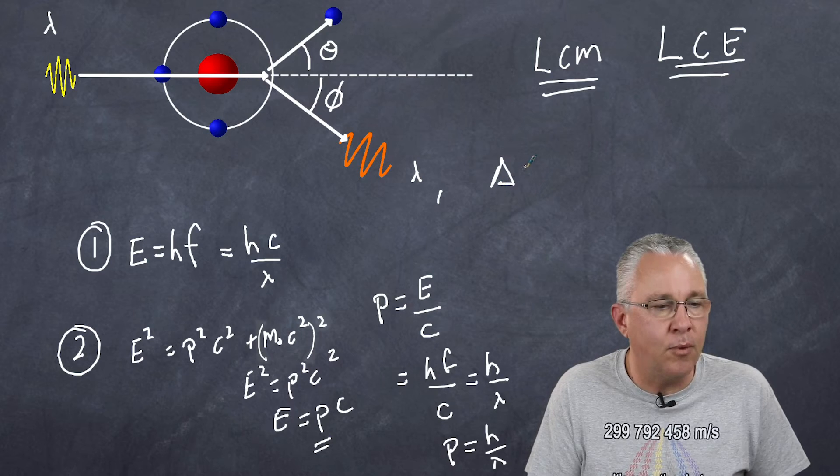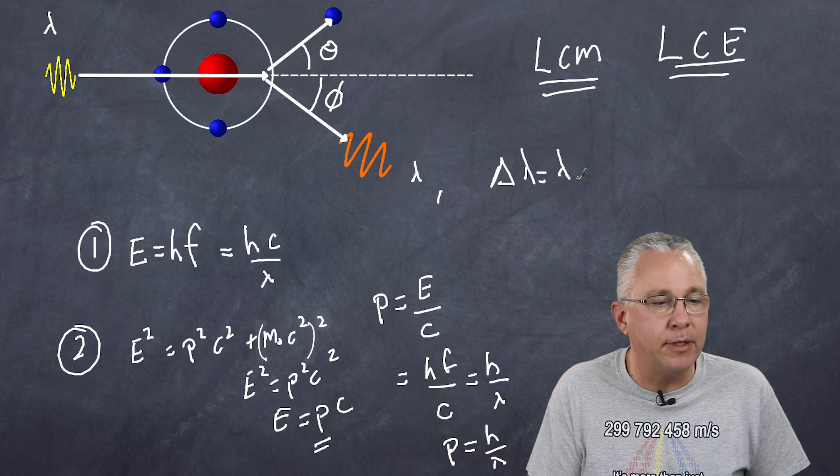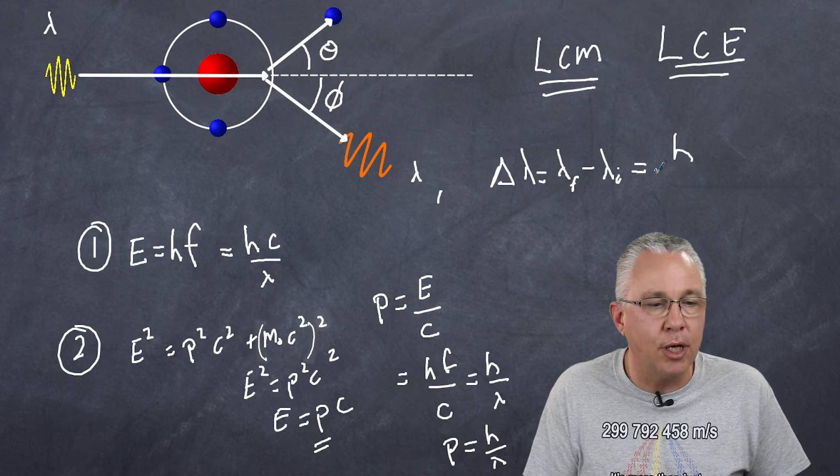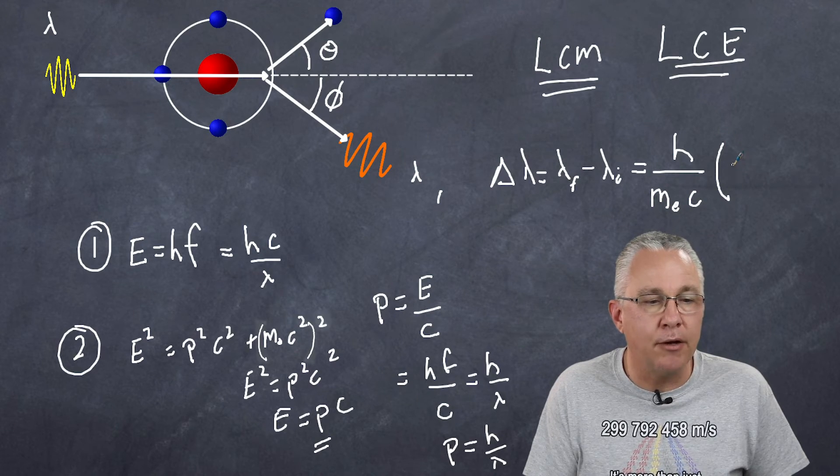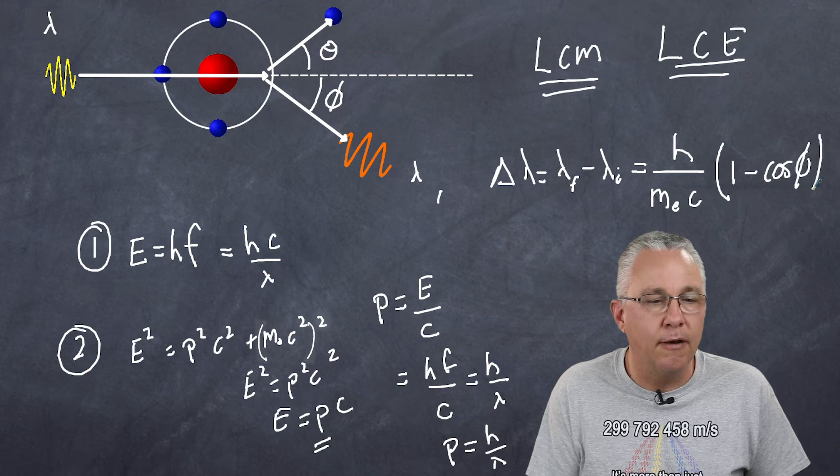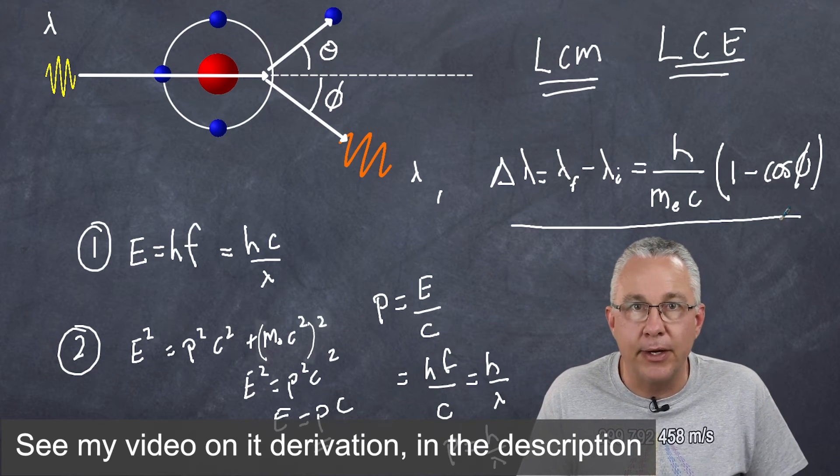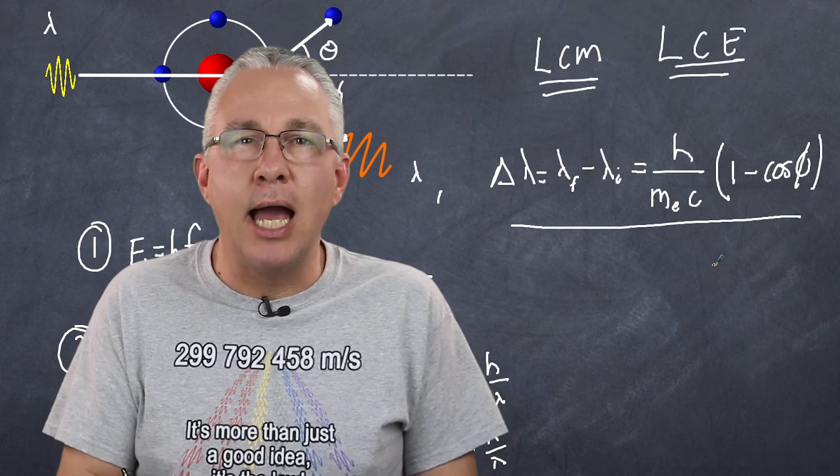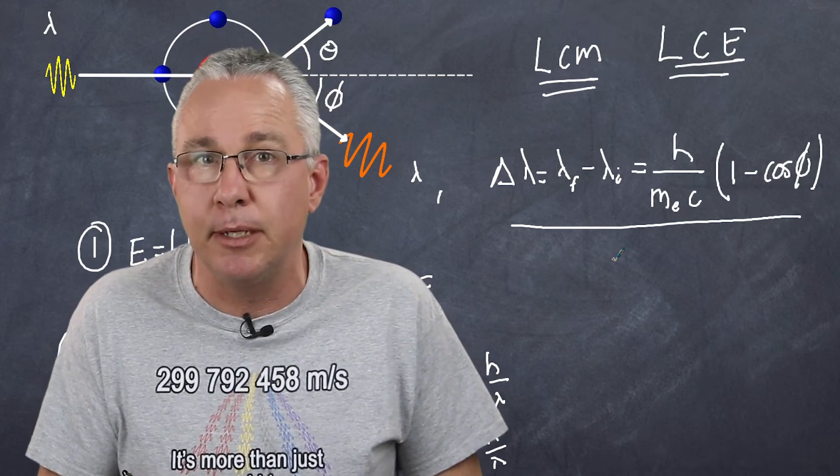And he comes up with this formula. The difference in wavelength, which is basically my outgoing wavelength minus my incoming wavelength, is equal to H over MC times 1 minus the cosine of our angle phi. Now this explains Compton scattering, or the Compton effect.